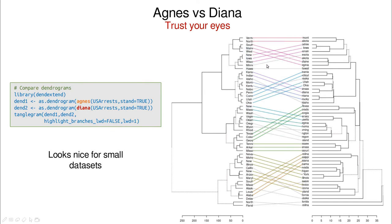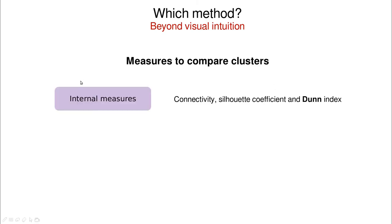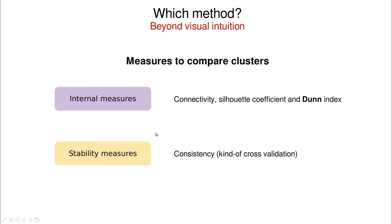Here's another example using the US Arrests dataset covered in another video. With only 50 observations the description is pretty nice — except for a few gray-line cases, clustering is almost identical at the leaf level. Now I'm going to introduce some measures of comparison between clusters. The first type are called internal measures, and we'll cover three: connectivity, silhouette coefficient, and Dunn index. The second type are called stability or external measures.